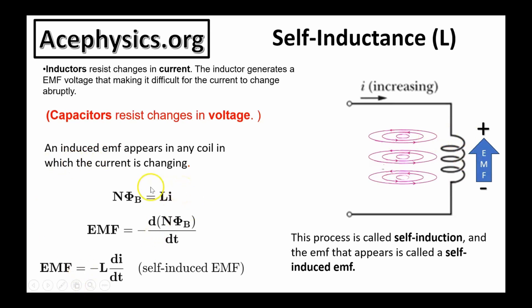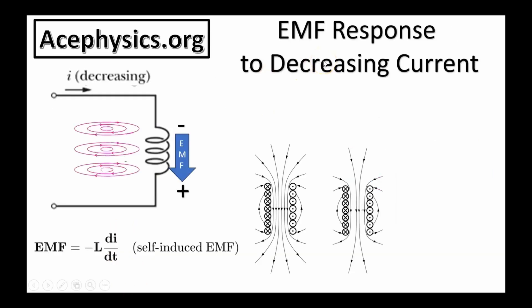We know from Faraday's law that EMF is equal to negative the time derivative of flux, and when we combine this together with the fundamental formula for inductors, we get EMF is equal to negative L di dt. This is a foundational formula. Let's discuss the EMF response to decreasing current.